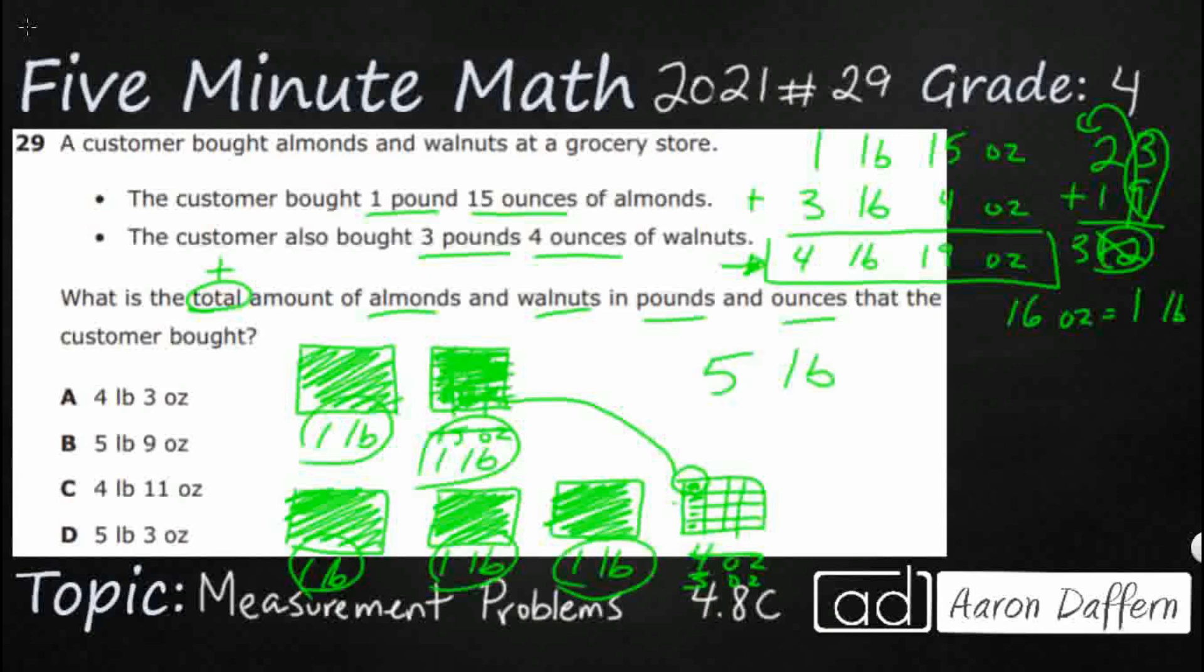And then I've only got 1, 2, 3. I used to have 4 ounces of walnuts, but I gave 1 ounce over here to make this a complete pound. I've got 3 ounces. And that is the same as 4 pounds, 19 ounces, but it's a better way of showing it. Our answer here is D.